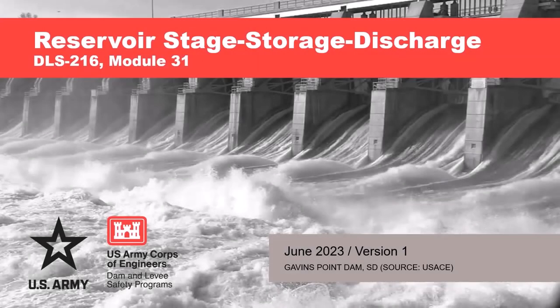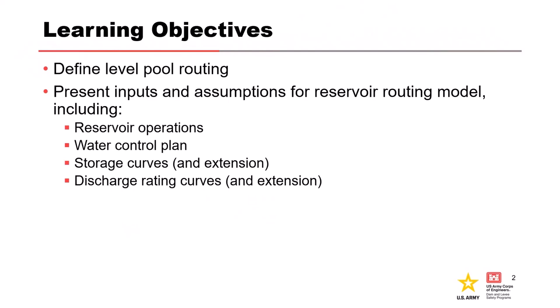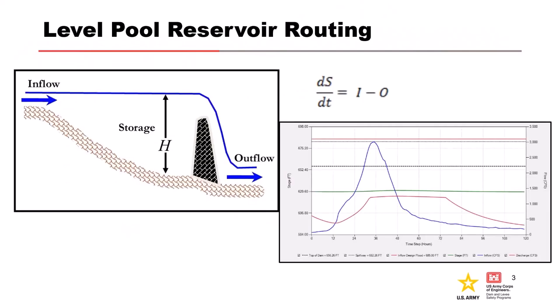We're going to talk about the work necessary to develop the reservoir model within RMC-RFA, which is represented using a staged storage discharge relationship. This presentation is going to focus on the reservoir routing model, and we'll talk about the basics of level pool routing, reservoir operations, the water control plan, how to extend your storage curves, and developing or extending discharge rating curves for your model. The reservoir routing model is important because it helps us to determine what the peak stage is going to be in RMC-RFA and informs our staged frequency curve or hydrologic loading curve.